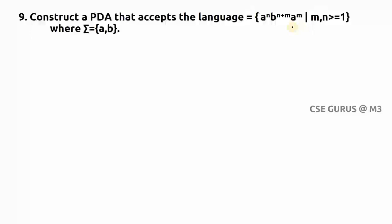First we check whether we can construct the pushdown automata. We look at the comparisons: a^n with b^n, and b^(n+m) can be written as b^n followed by b^m. So we check: number of a's matched with b^n, and then b^m matched with a^m — that is the logic.